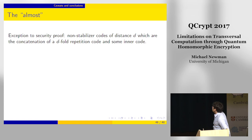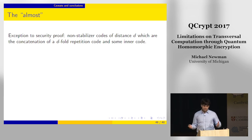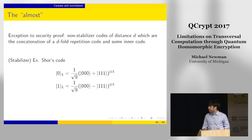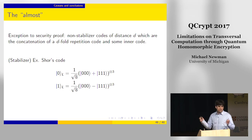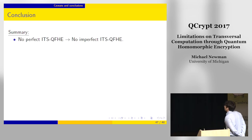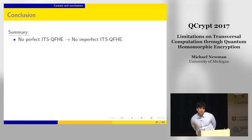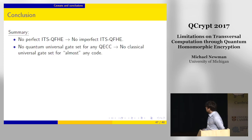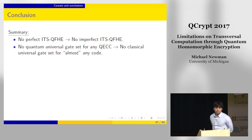The exception to the security proof: there are non-stabilizer codes of distance d that you can think of as the concatenation of a classical outer code with some inner code. These codes can't be mixed enough to get sufficiently small ciphertexts to argue security. A stabilizer example—probably the most famous—is Shor's code, which is the concatenation of a bit-flip code with a GHZ-state inner encoding. In summary: we've relaxed the no-go theorem about perfect information-theoretically secure quantum homomorphic encryption and shown that even with the epsilon relaxation, you still can't have efficient IT-secure fully homomorphic encryption, because evaluated ciphertexts grow too quickly. Off the exceptional set, no classical universal gate set can be implemented transversally for almost any code.